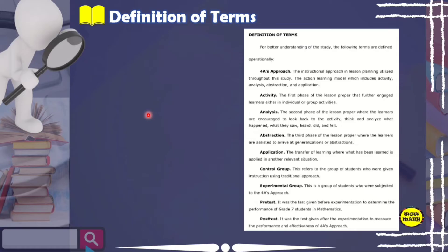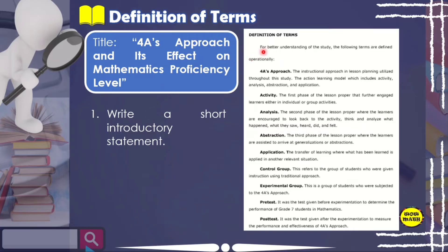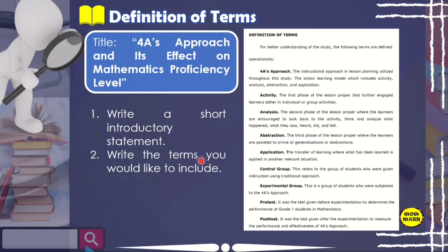So what are examples of a definition of terms? For example, the title of this research is about the 4A's Approach and its Effect on Mathematics Proficiency Level. What should we remember when writing the definition of terms? First, write a short introductory statement — a very brief one. For example, as shown here: 'For better understanding of the study, the following terms are defined operationally.' Then we list the terms we want to include.